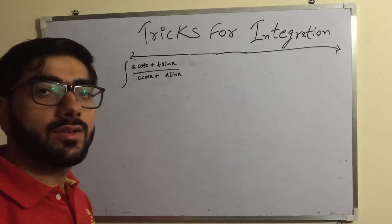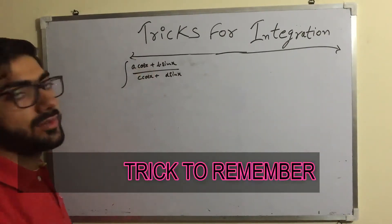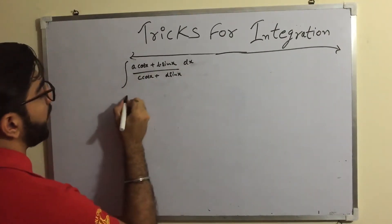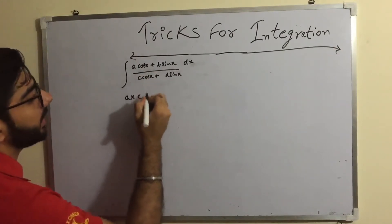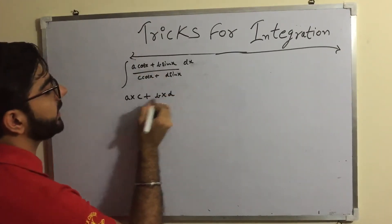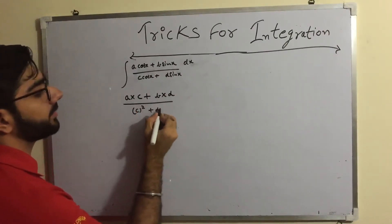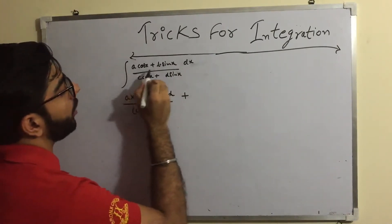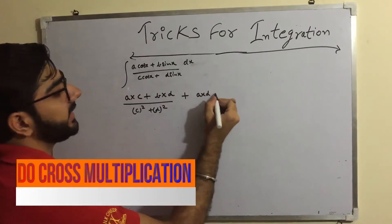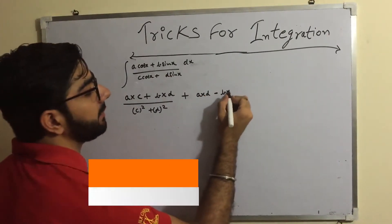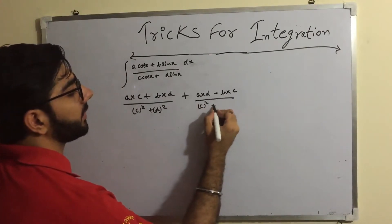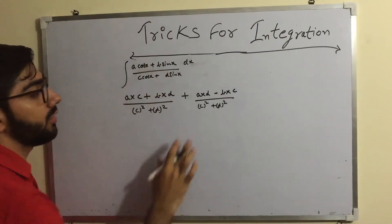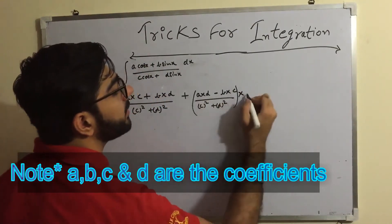The integration of (a·cosx + b·sinx) / (c·cosx + d·sinx) — first you have to multiply a×c plus b×d, divided by c² + d², and then you take cross multiplication like a×d minus b×c, divided by c² + d².